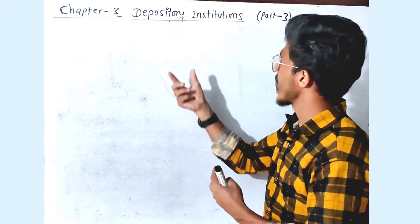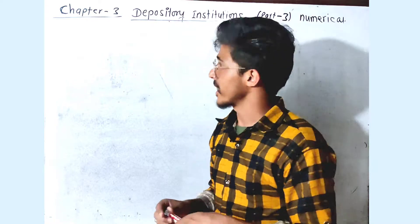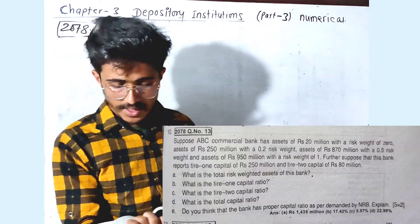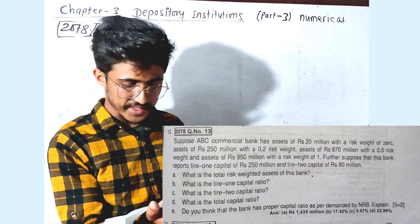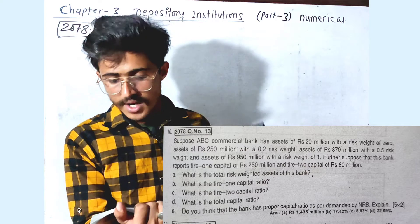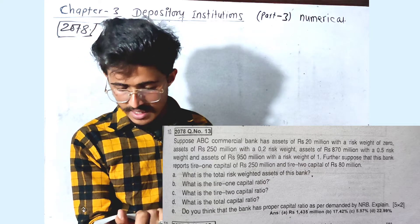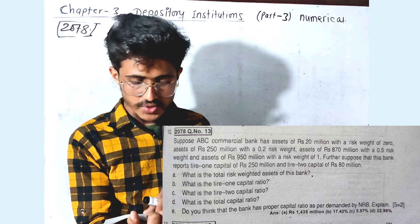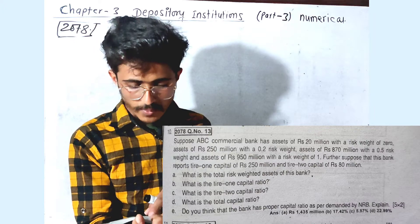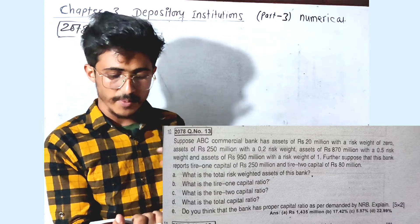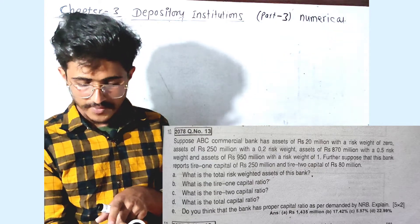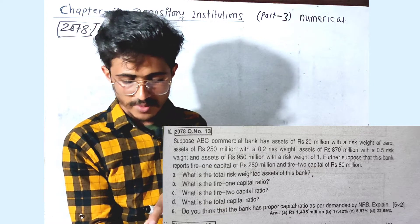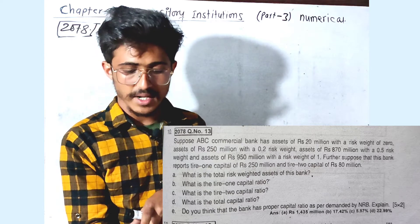I will show you the final exam of 2078, problem solved. The question will be shown on screen. Assets of 20 million with a risk weight of 0, assets of 250 million with a risk weight of 0.2, assets of 870 million with a risk weight of 0.5, and assets of 950 million with a risk weight of 1 (100%).